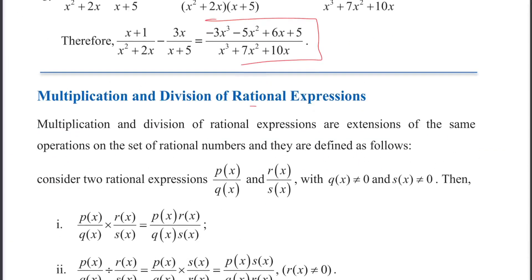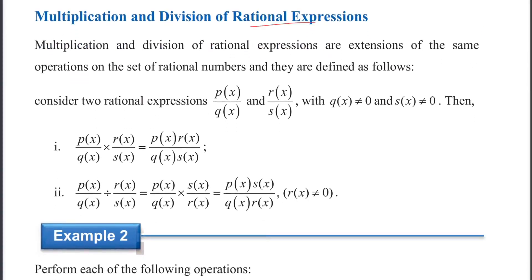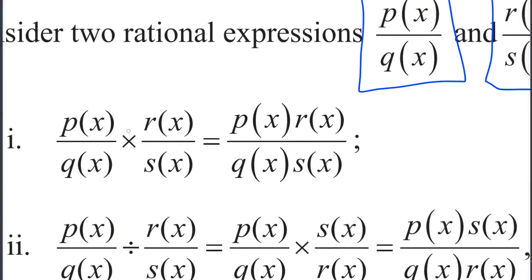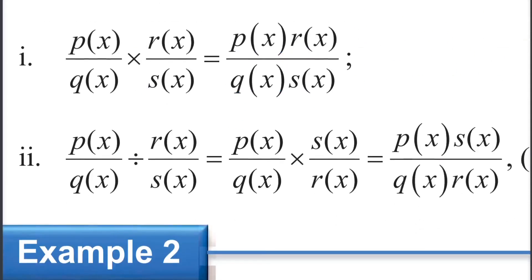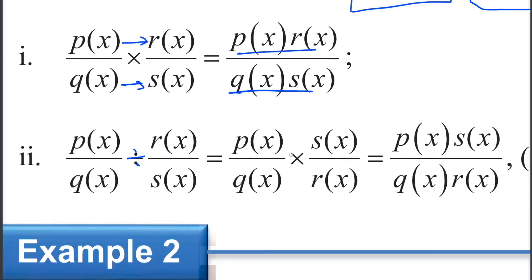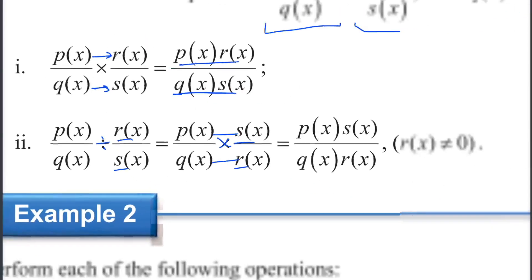Multiplication and division of rational expressions. We are going to solve this: P of x over Q of x, times R of x over S of x. PR is equal to QS. We find P, or Q, or R.